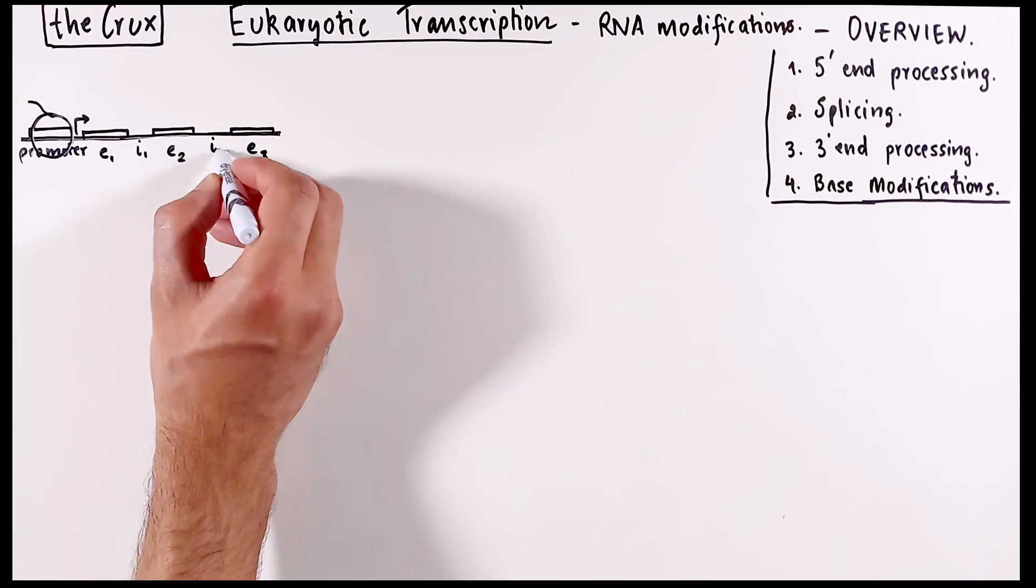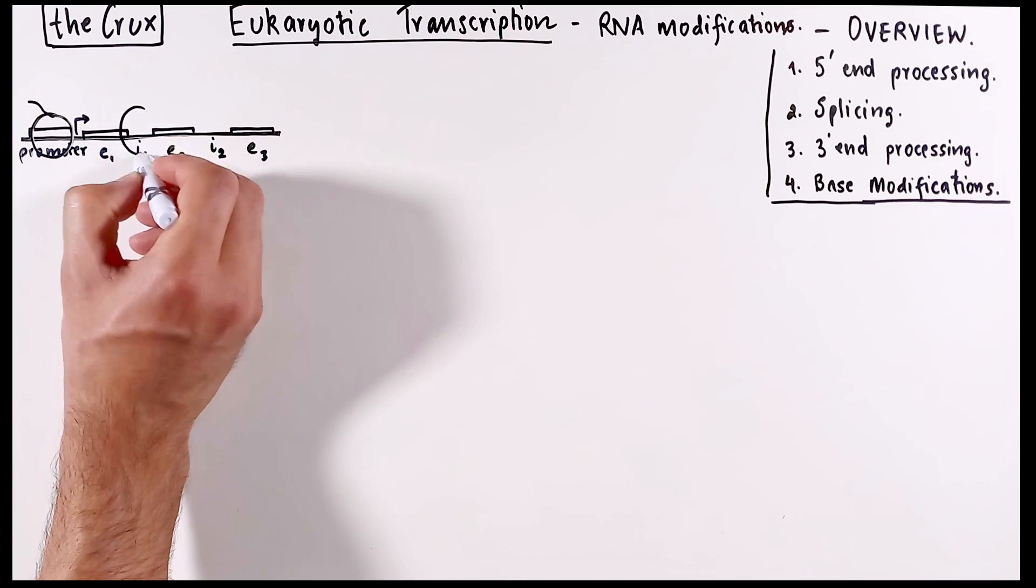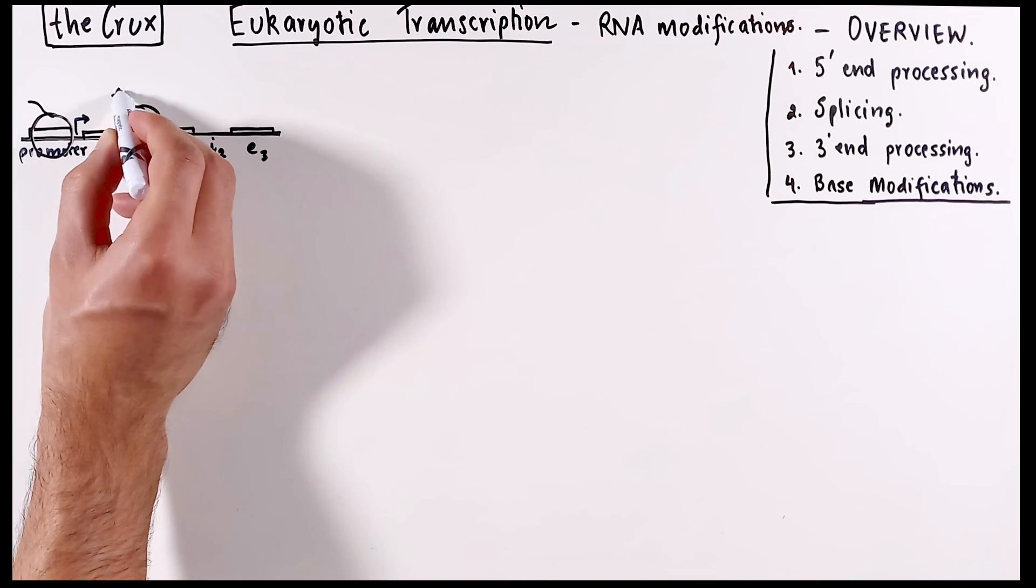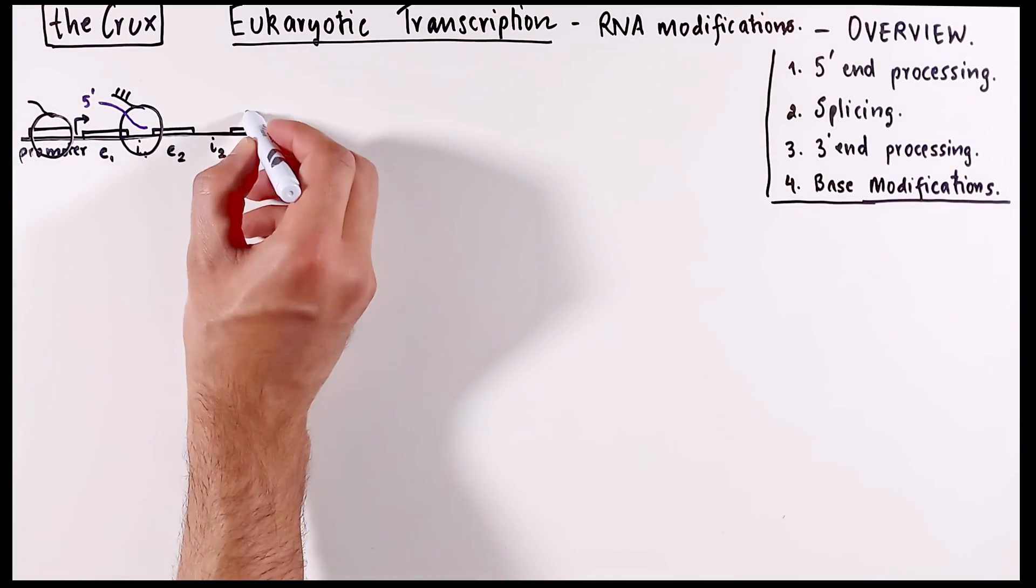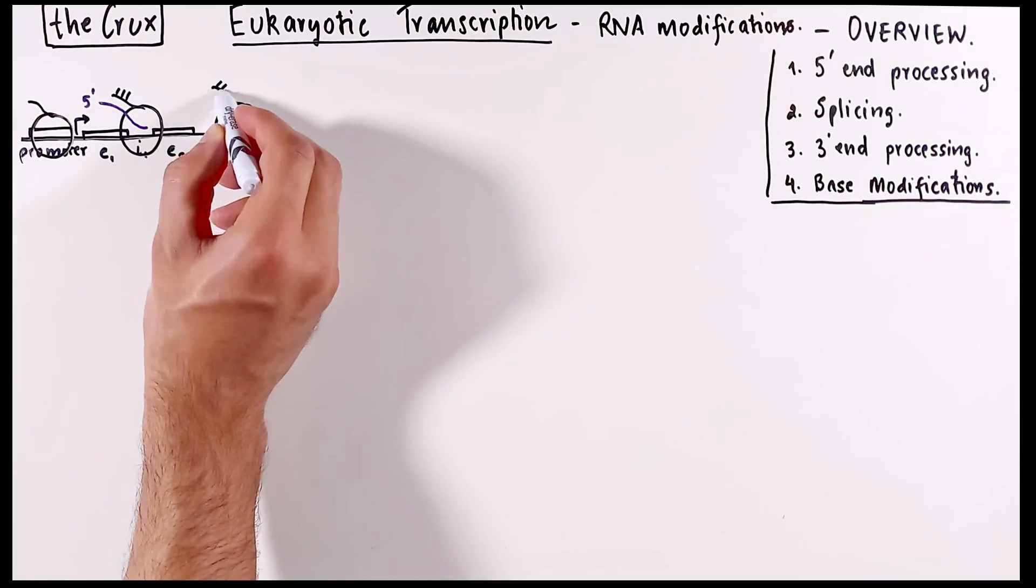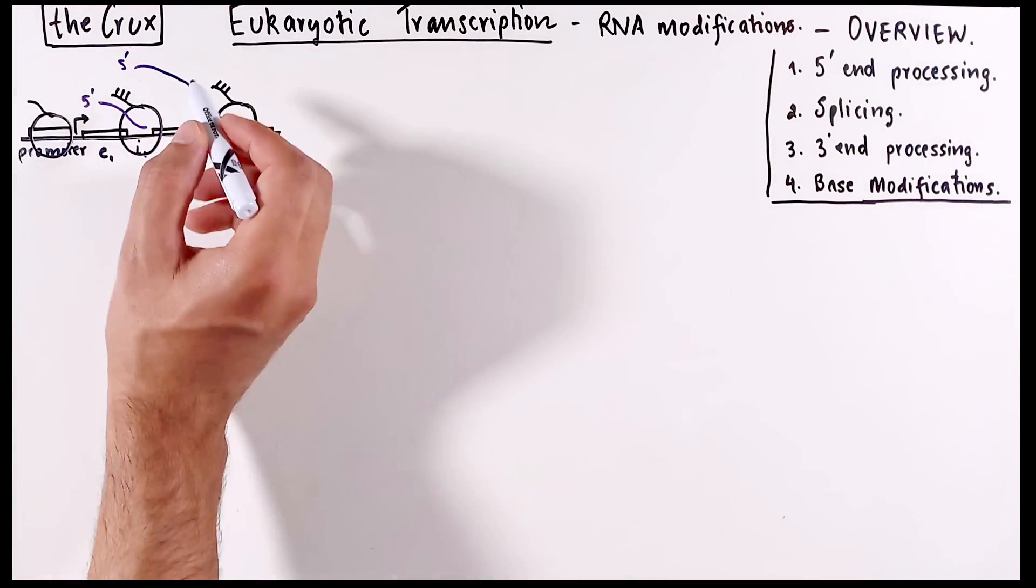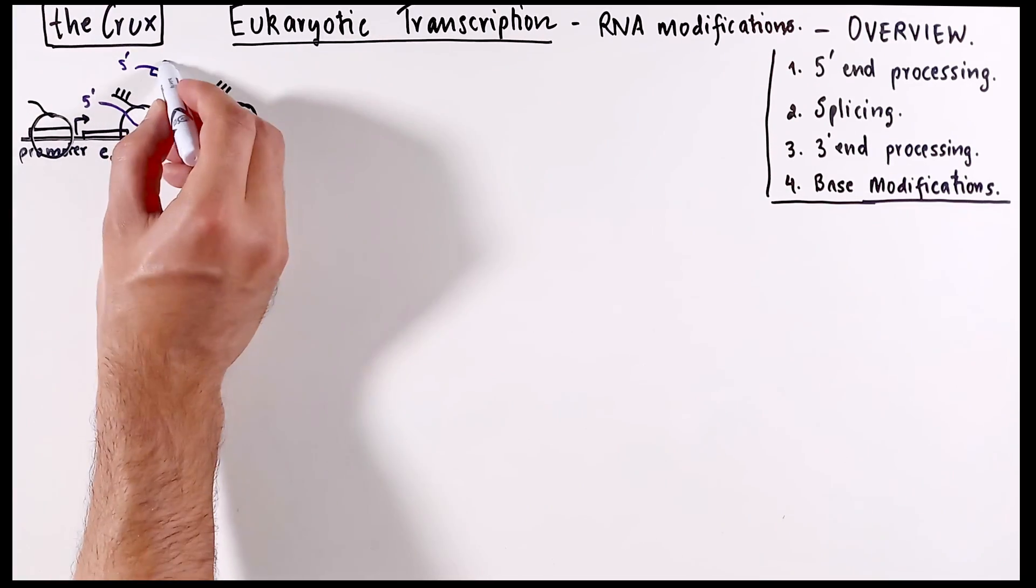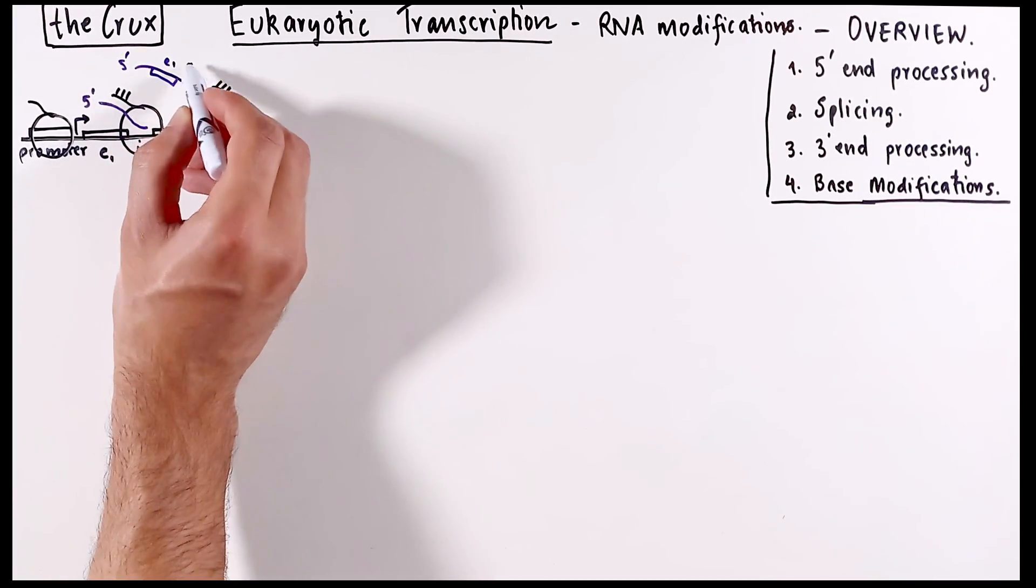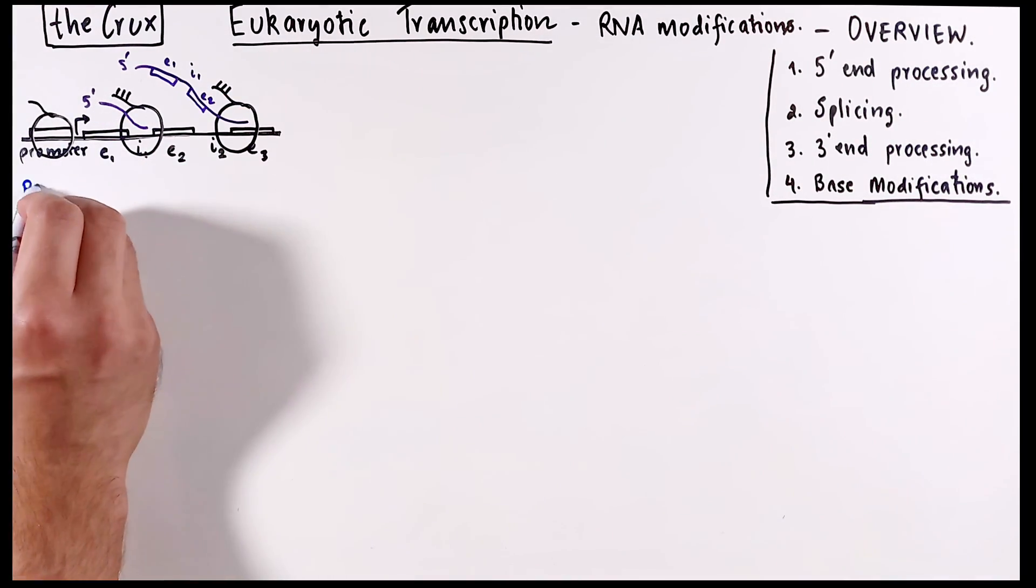And as the polymerase moves along the gene in the stage called elongation, it picks up some C-terminal domain modifications, and the RNA is made. As it moves along the gene, the RNA gets longer and longer, but we notice that the RNA has both introns and exons. The introns are not coding, so we need to get rid of that, among other things, and these are the sort of modifications that need to occur in this growing RNA.